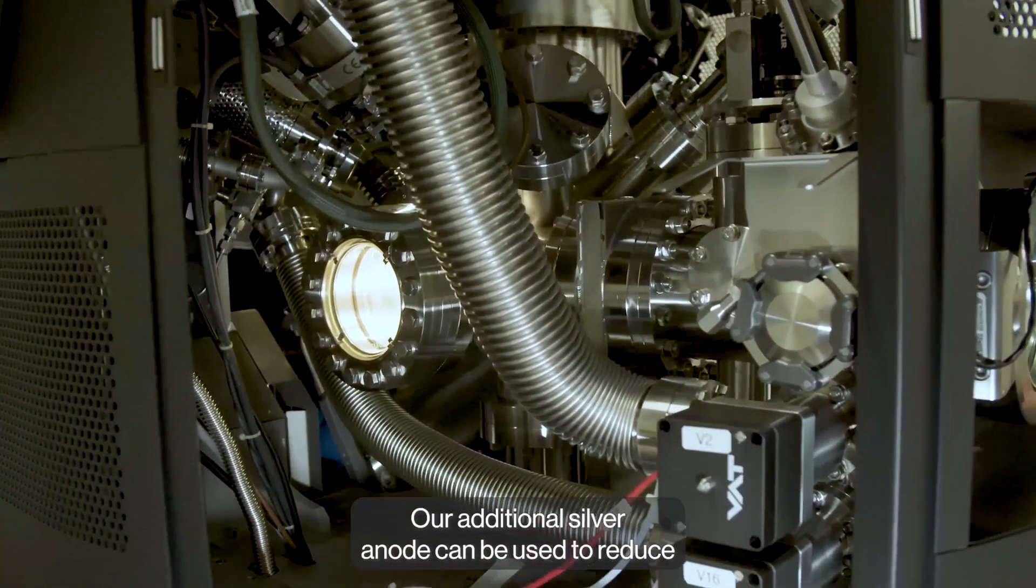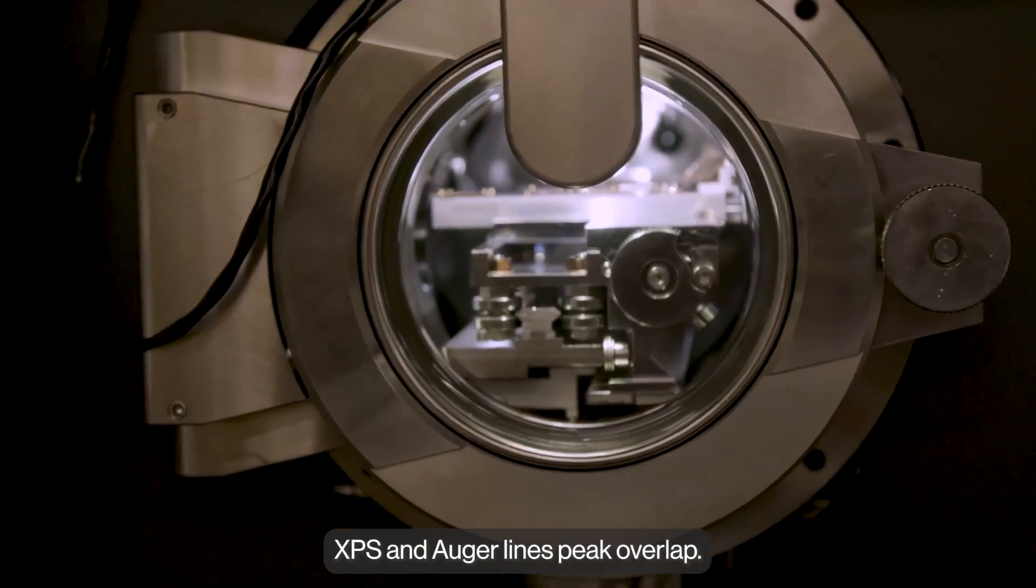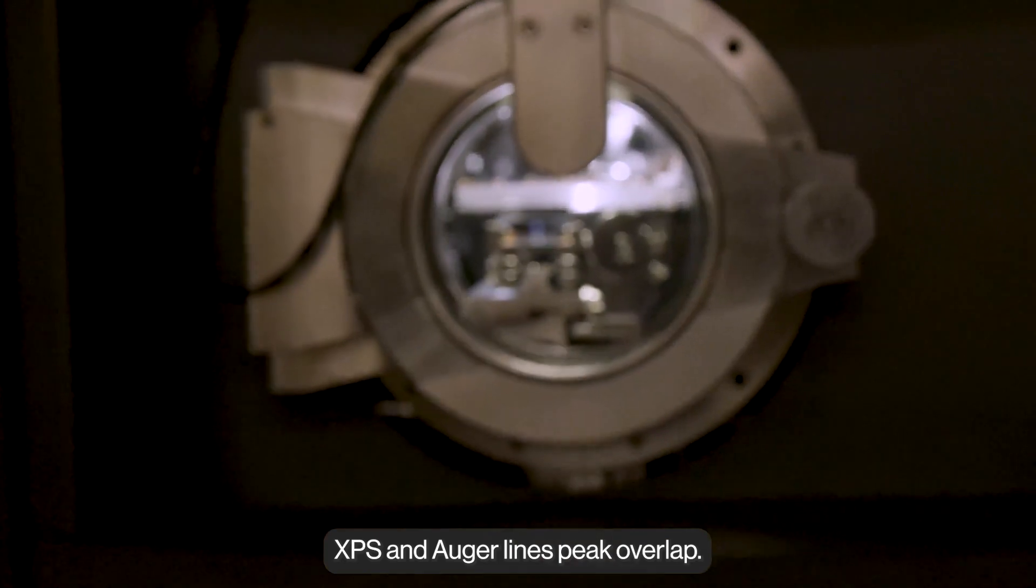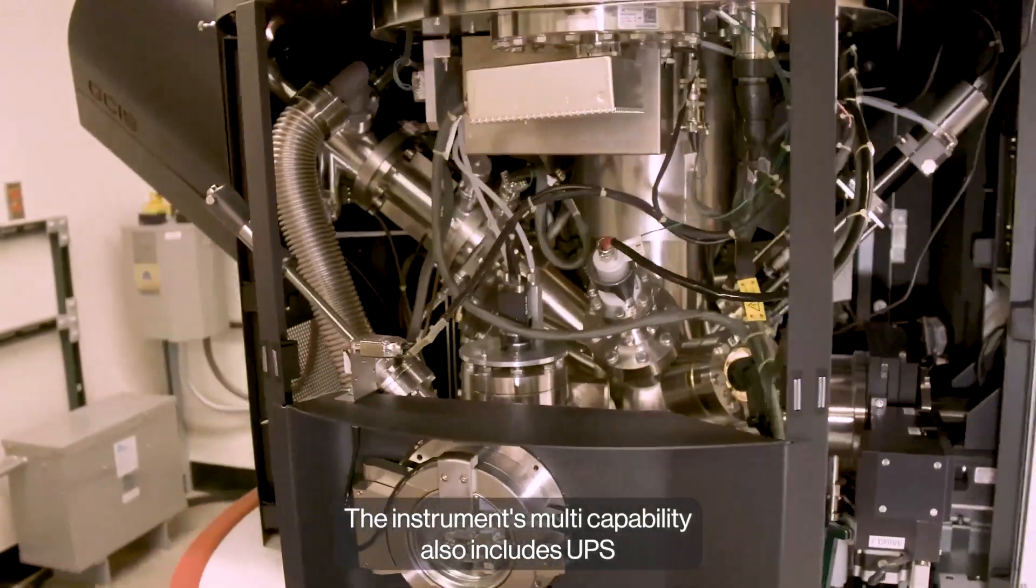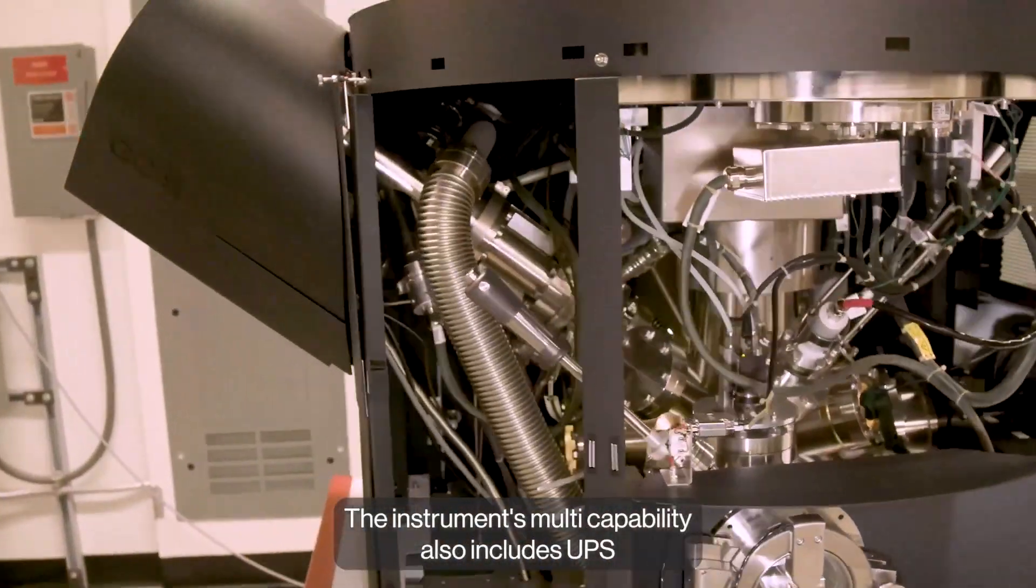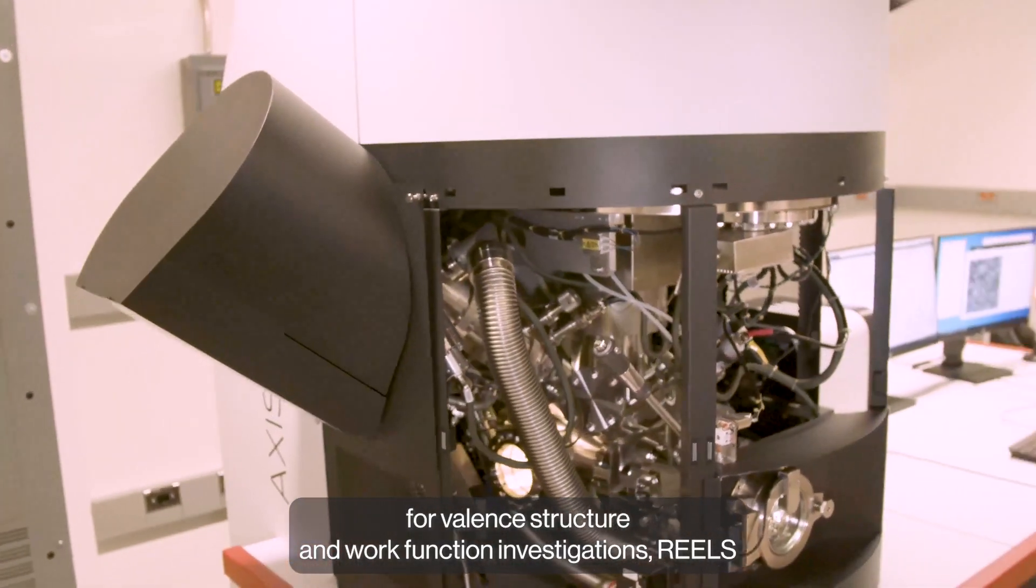Our additional silver anode can be used to reduce XPS and Auger lines peak overlap. The instrument's multi-capability also includes UPS for valence structure and work function investigations.